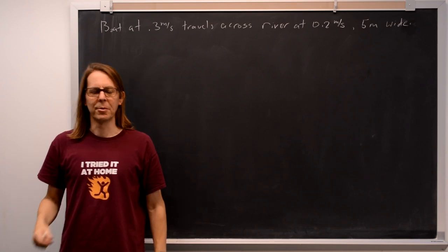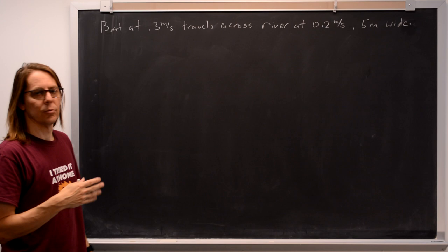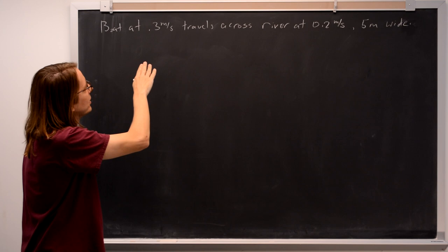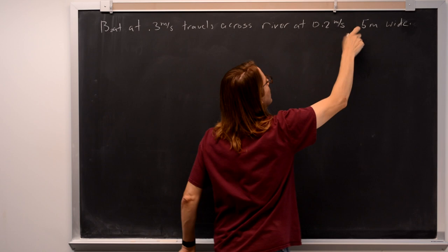Here's a problem about a boat moving across a river, and it's a chance to think about reference frames and how to solve these problems. So we have a boat that travels at 3.3 meters per second across a river flowing at 0.2 meters per second, and the river is 5 meters wide.